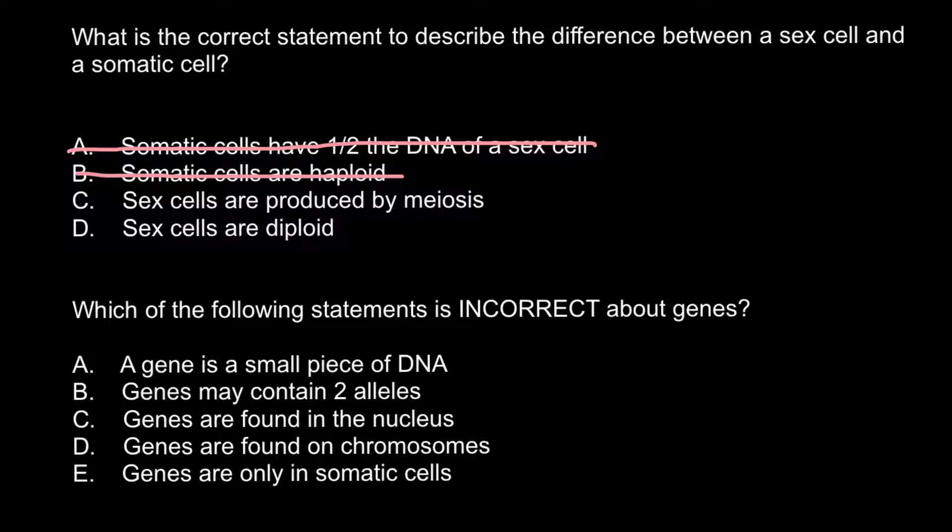Answer C: Sex cells are produced by meiosis. This is the true answer, but let's check the last answer. Answer D: Sex cells are diploid. This is not true — sex cells are haploid.